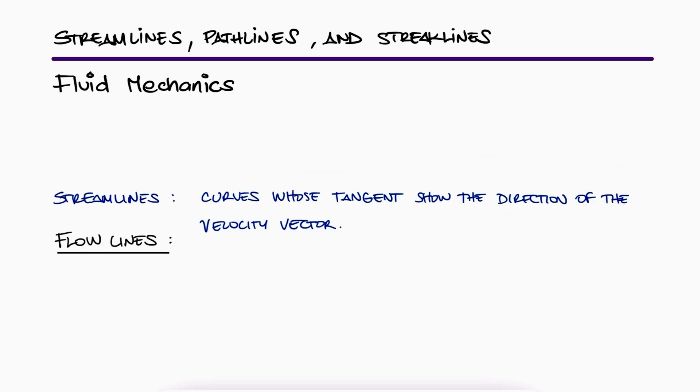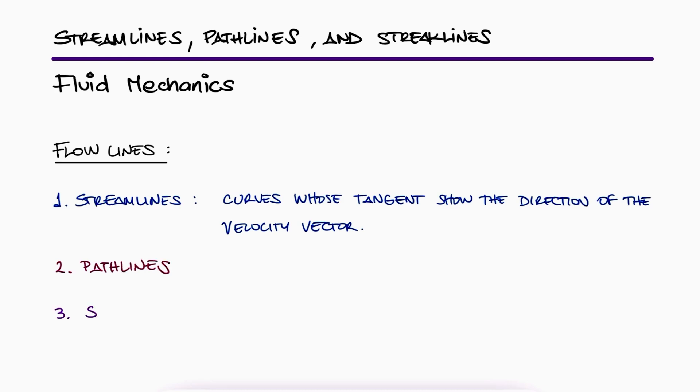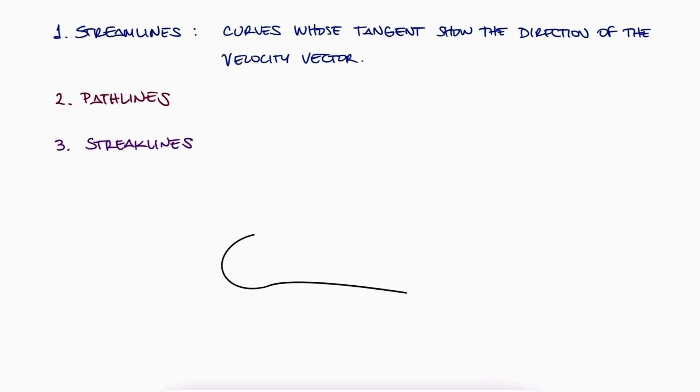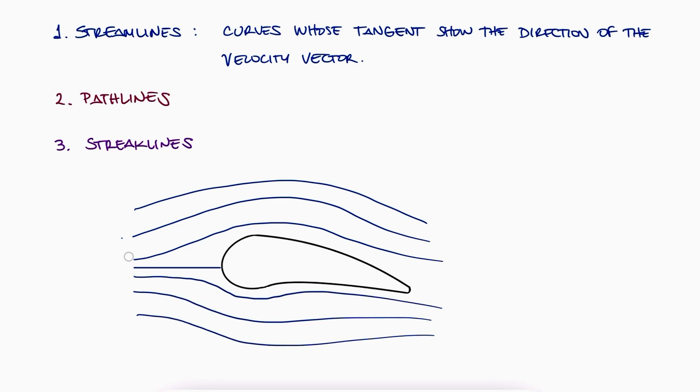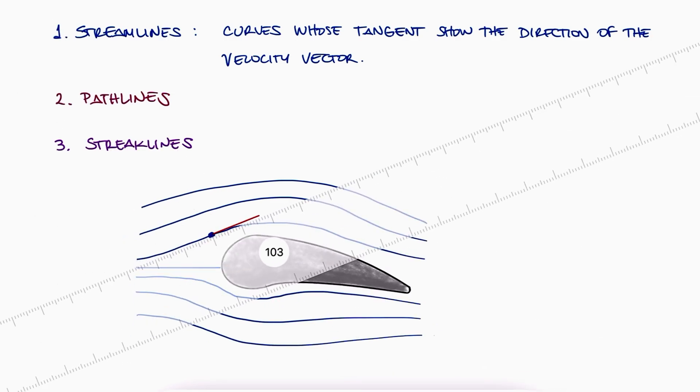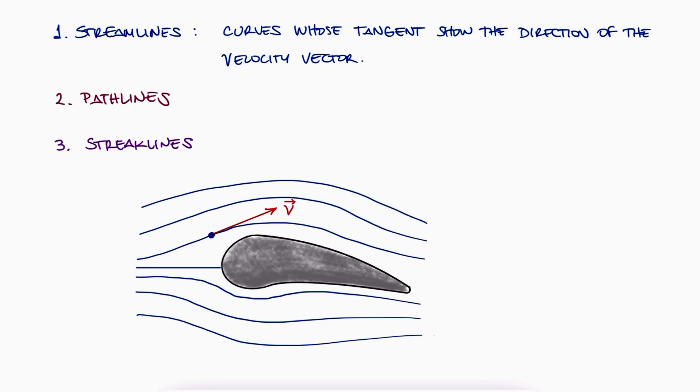We will look at these streamlines in a bit more detail, as well as pathlines and streaklines. When we look at an object over which a fluid flows, let's say it's something that looks like the side profile of an airfoil, the streamlines would look something like this, where at any point, their tangent would tell us the direction of the velocity vector at that location. And this is why we use streamlines as one of our flow lines to describe our flow field.